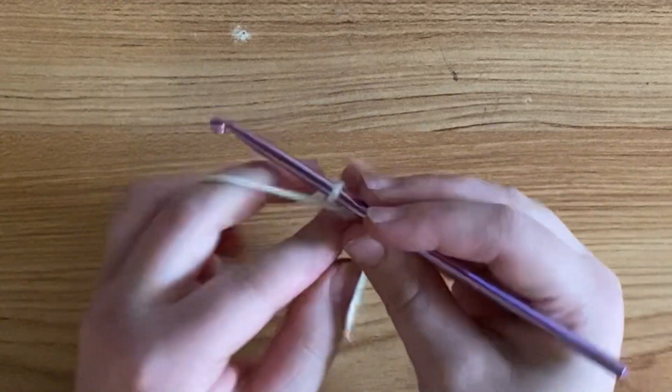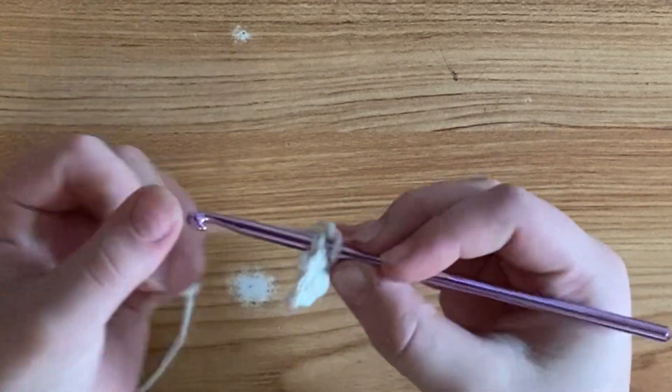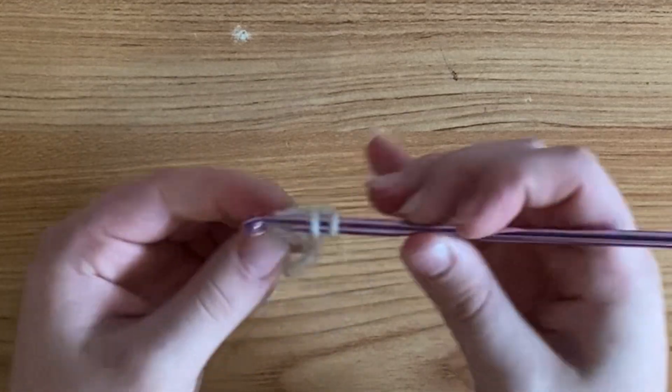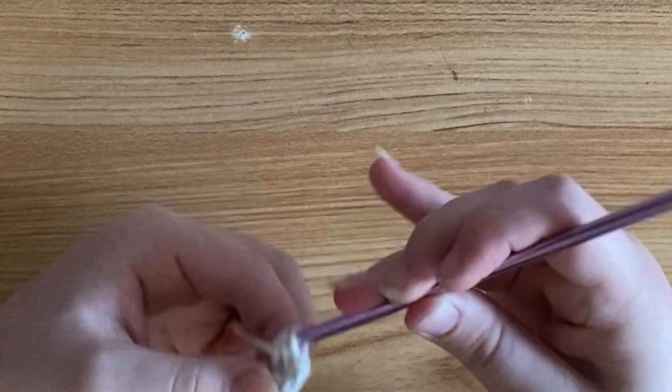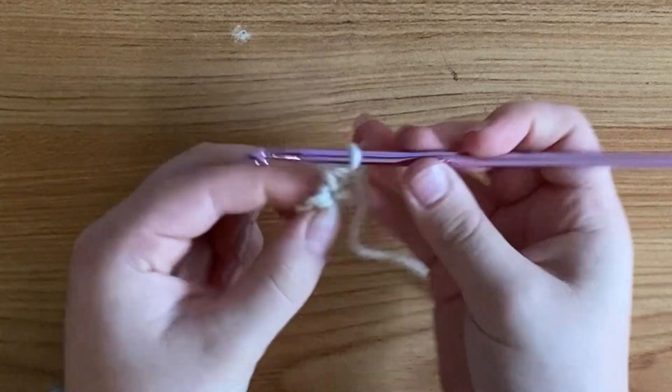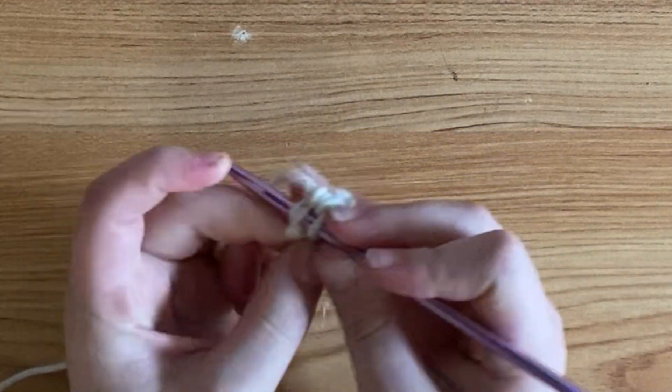To begin your next row, chain one and turn your work. Beginning over the first two stitches, you're going to make a single crochet decrease, so a single crochet two together over the first two stitches. Then you're going to single crochet into the last stitch.